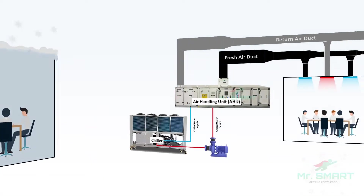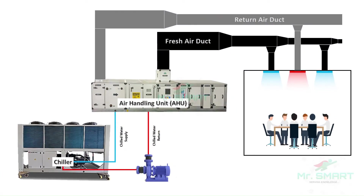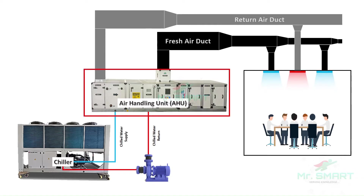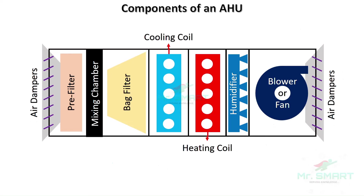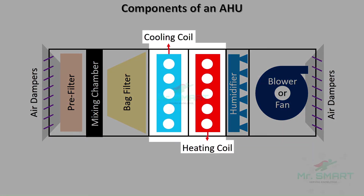This great job is done by the heart of the HVAC system, called an AHU or air handling unit. We have covered all the components of an AHU and their functioning in our previous video. Temperature control and maintenance is the principal duty performed by two important components of an AHU: a cooling coil and a heating coil.